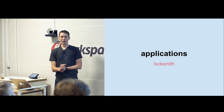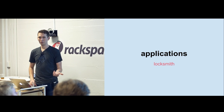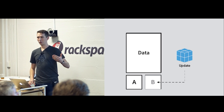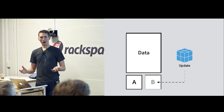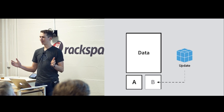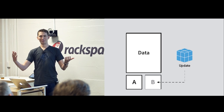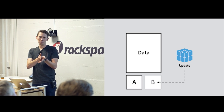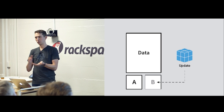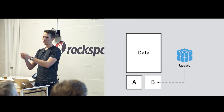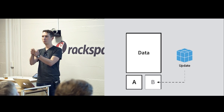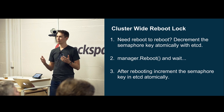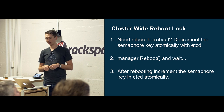Some of the applications for etcd: the first thing we built etcd for was locksmith. CoreOS does an AB partition updating scheme — it'll update one partition, reboot a host, and you'll be on the new partition. Obviously this would not be great if we rebooted 100 CoreOS cluster members all at the same time, so you need coordination. Locksmith lets the system administrator say 'I only want one or two machines rebooting at a time,' gives a ticket to those machines, they return the ticket when they successfully come back from reboot, and the rolling update continues. Essentially, a cluster-wide reboot lock is a use case built on top of etcd.